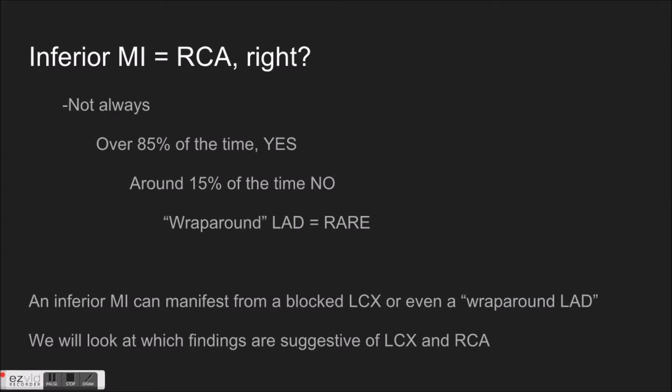Around 15% of the time, you're not. It's a left circumflex occlusion — so on the opposite side of the heart. But remember that all three coronary arteries do terminate somewhere in the neighborhood of the inferior wall, except for the ones that wrap around, which is often the case in the LAD. It's rare to see a wraparound — a type three LAD wraparound occlusion — but it does happen. We've got EKGs from that as well in this video.